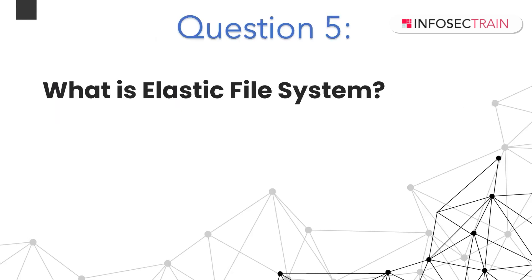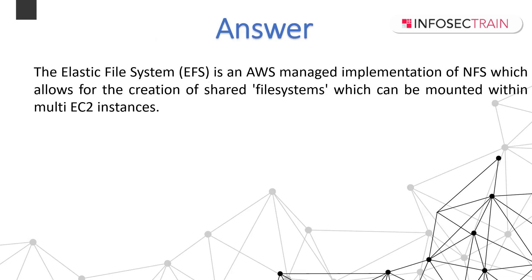What is Elastic File System? Amazon EFS is an AWS-managed implementation of NFS which allows for the creation of shared file systems that can be mounted within multiple EC2 instances to support a wide variety of cloud storage workloads. Amazon EFS offers two performance modes: General Purpose mode and Maximum I/O mode. General Purpose is ideal for latency-sensitive use cases like web serving, content management systems, and general file serving. If you don't choose a performance mode when creating your file system, EFS selects General Purpose by default. A file system can scale to high levels of aggregate throughput with a trade-off of slightly higher latency for file metadata operations. EFS also uses lifecycle policies with storage classes.